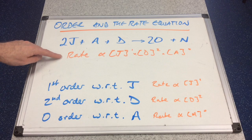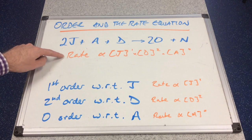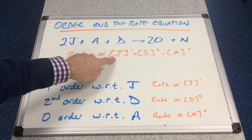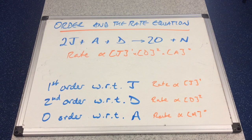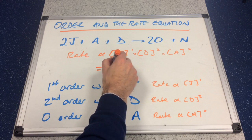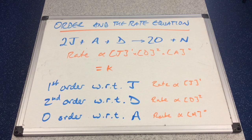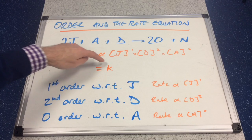We're going to combine these three statements into one. The overall rate of this reaction is proportional to the concentration of J raised to the power 1, multiplied by the concentration of D to the power 2, multiplied by the concentration of A to the power 0. To lose this proportionality and make it an equality, we need to introduce a constant. The constant used in chemistry in this scenario is called the rate constant, and it has the letter K.